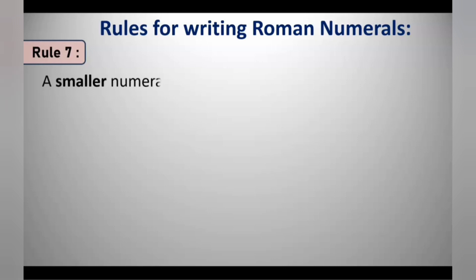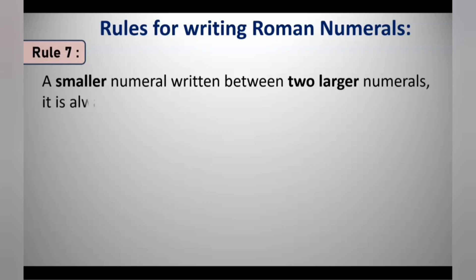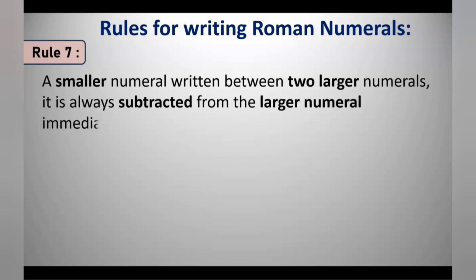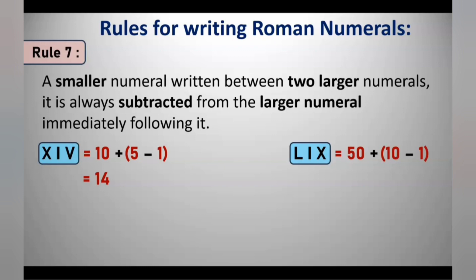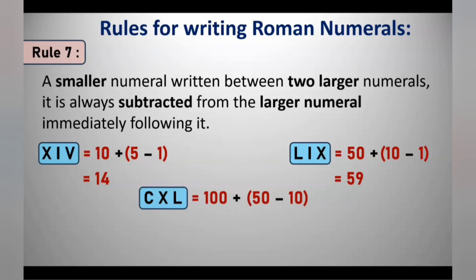Rule 7: When a smaller numeral is written between two larger numerals, it is always subtracted from the larger numeral immediately following it. For example, in XIV, I is placed between X and V, so I is subtracted from 5: 10 plus 5 minus 1 equals 14. In LIX, I is between L and X, so 50 plus 10 minus 1 equals 59. In CXL, X is in the middle of C and L, so 100 plus 50 minus 10 equals 140.